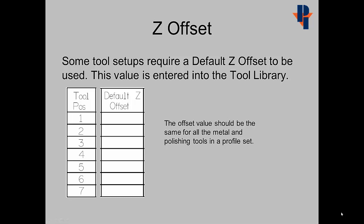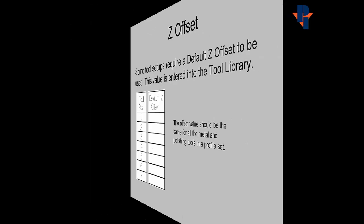The Z offset value should be entered into the tool library section of the ITM sheets. The offset value should be the same for all metal and polishing tools in a profile set. Thank you for watching.